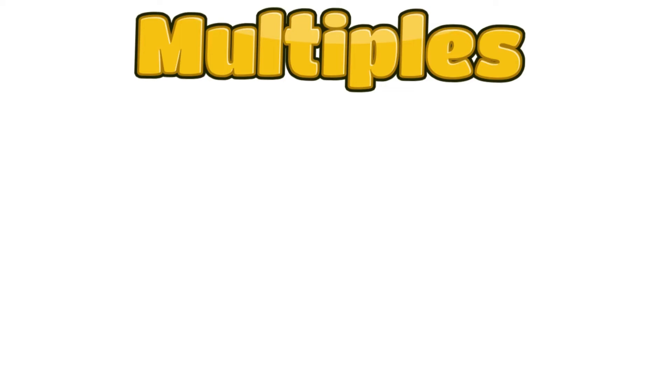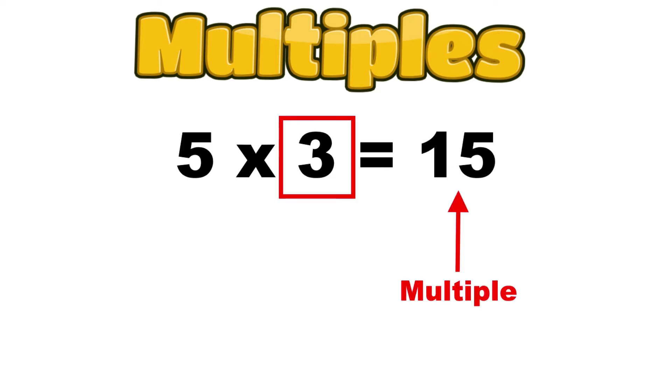Multiples are the answers you get when you multiply two whole numbers. In the problem 5 times 3, 15 is considered a multiple of both the 3 and the 5.